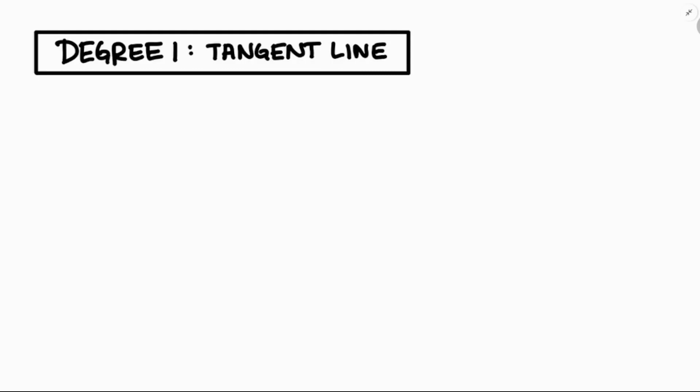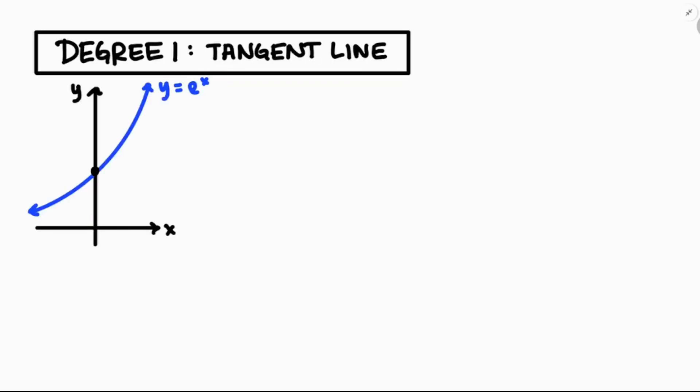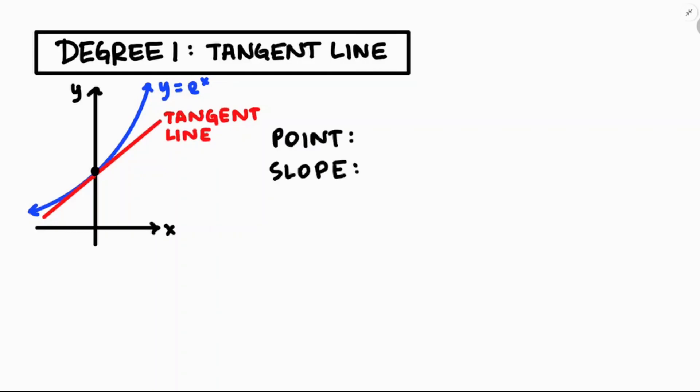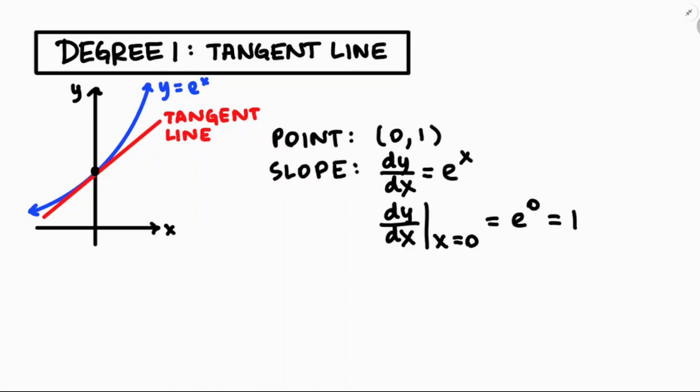We're going to start with a degree-1 tangent line, a situation you've run into many times. We're thinking about the function y equals e to the x. The tangent line shares the same y-coordinate and the same slope. To write the equation we need a point and a slope. We'll center our discussion at x equals 0 because e to the 0 is 1, so the point is (0, 1). The derivative of e to the x is also e to the x, so plugging in x equals 0 gives a slope of 1.